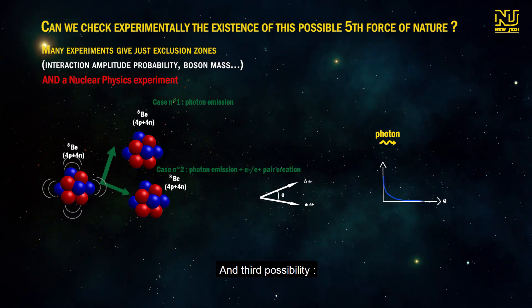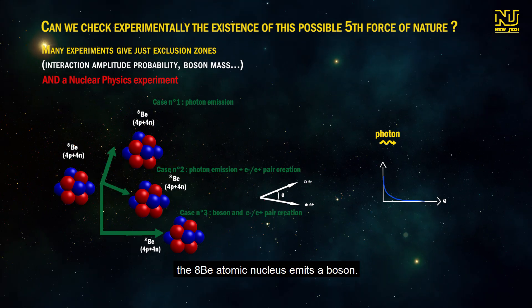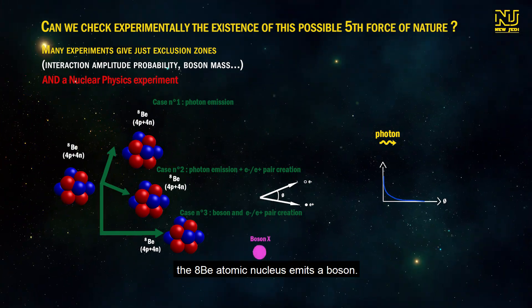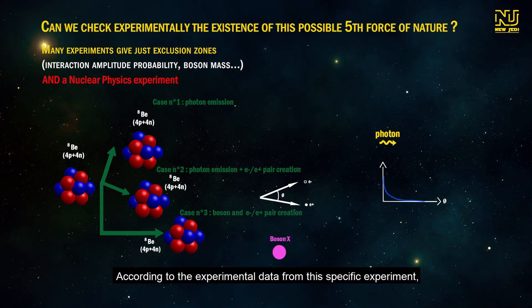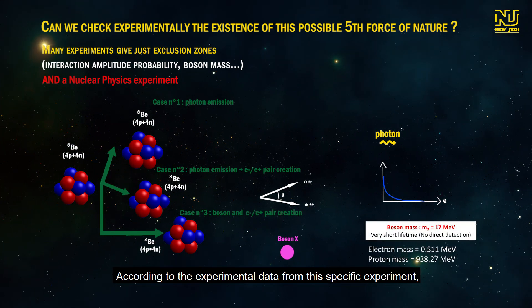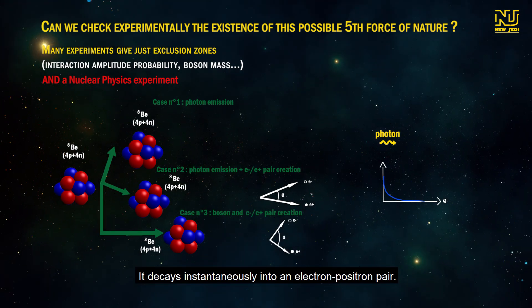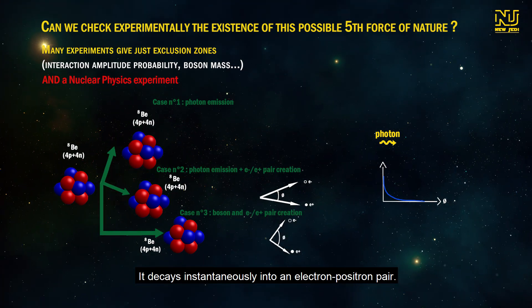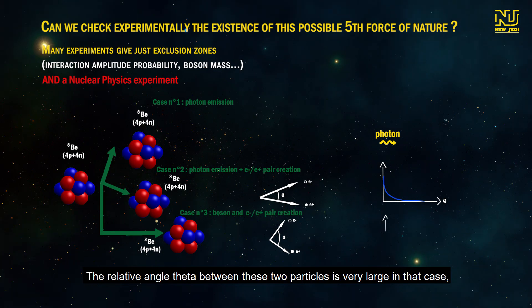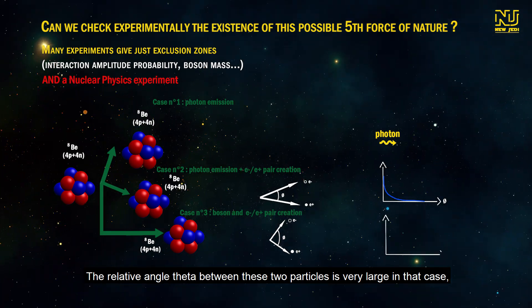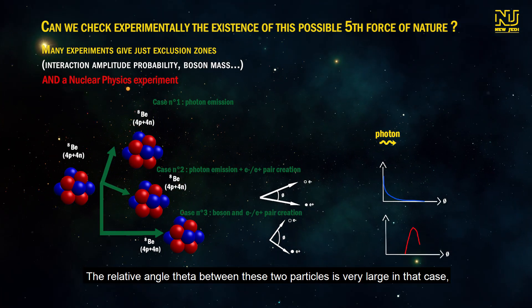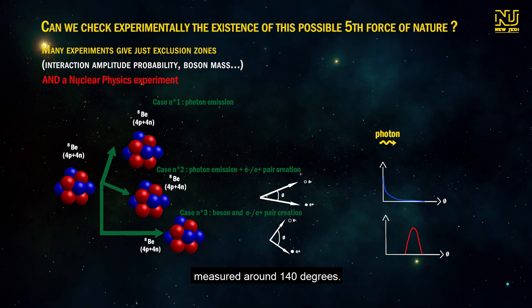And a third possibility: The beryllium-8 atomic nucleus emits a boson. According to the experimental data from this specific experiment, its lifetime is very short. It decays instantaneously into an electron-positron pair. The relative angle theta between these two particles is very large in that case, measured around 140 degrees.